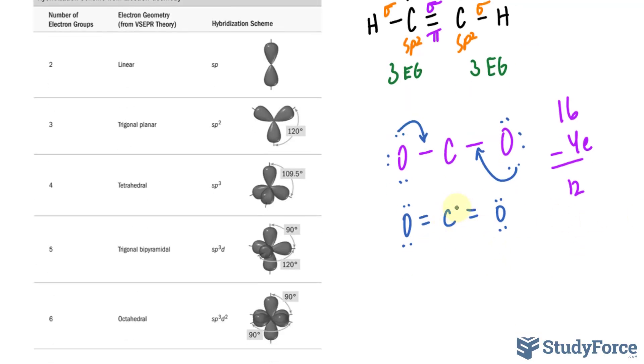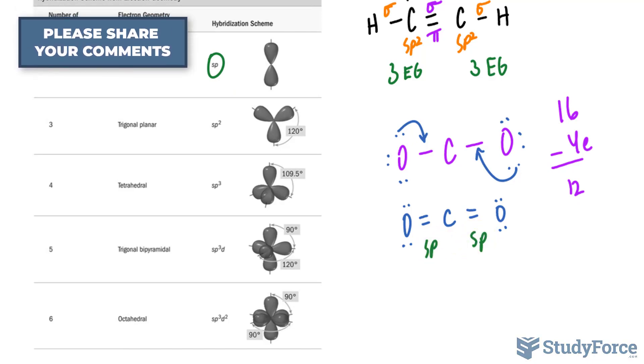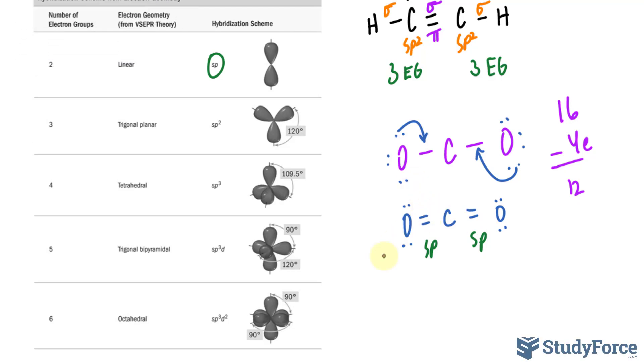Now we need to find out the total number of electron groups around this carbon. We have 1, 2, two bonding groups, no lone pairs, two plus zero equals two. So we are dealing with SP hybridization scheme. Given what we discussed in the previous example and in part two, this double bond will consist of one sigma bond and one pi bond. And the same thing goes with the other side of this molecule.